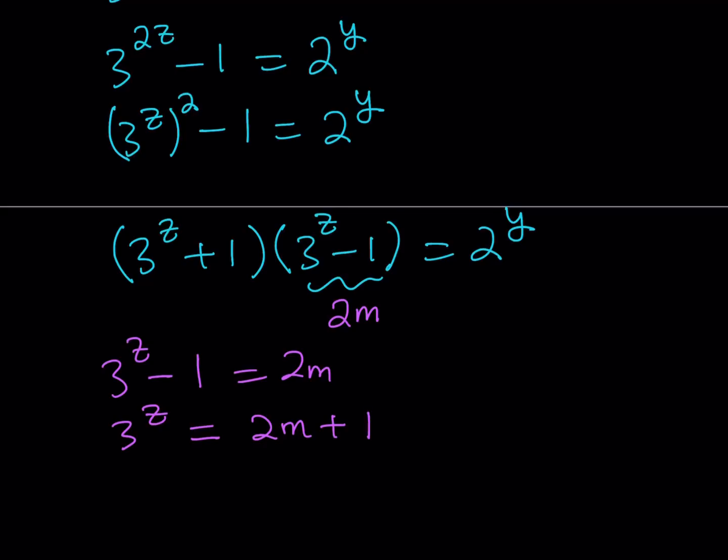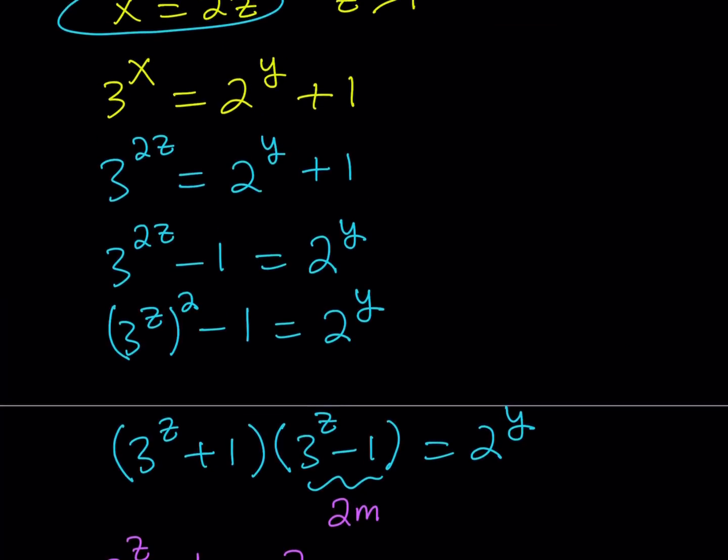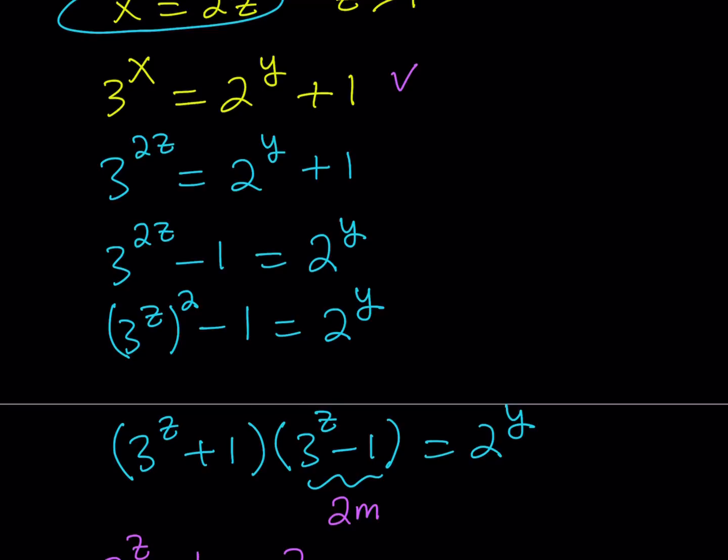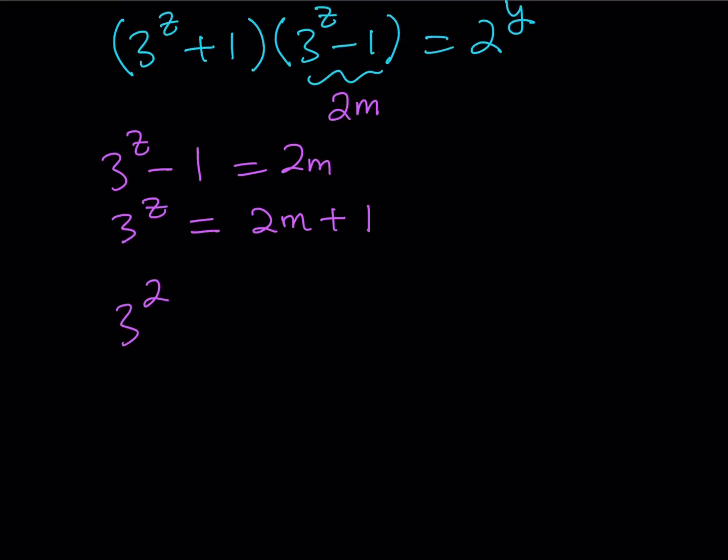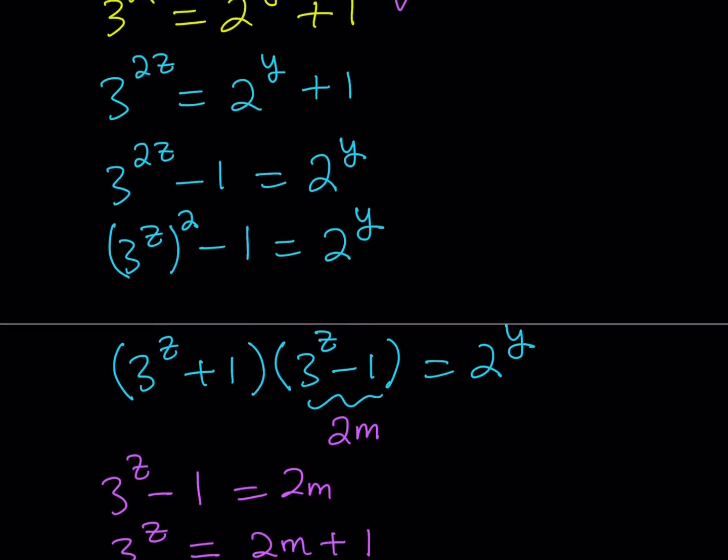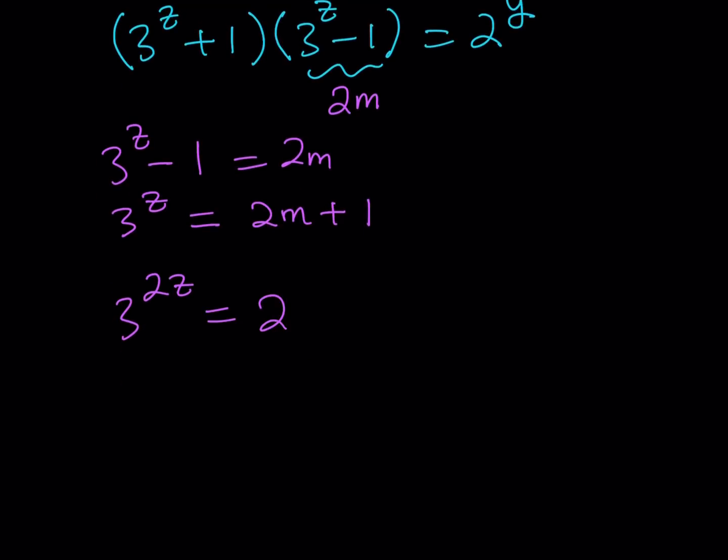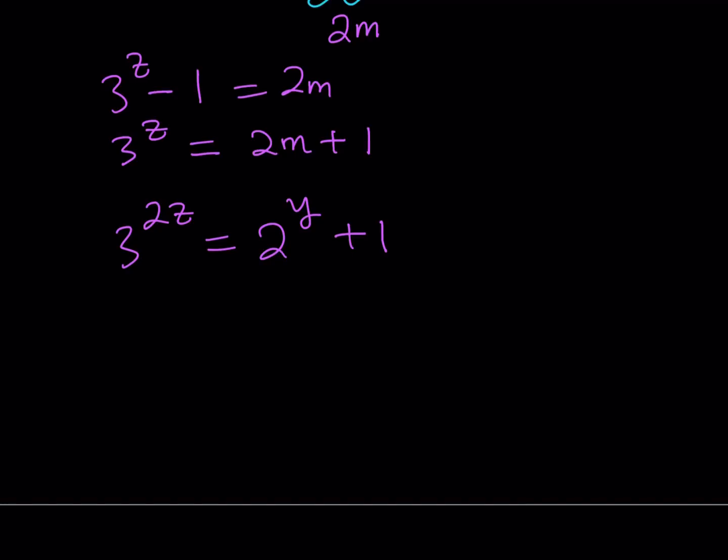Now what is so significant about it is our original equation. If you remember, we had this equation, and then we replaced x with 2z. So we have 3 to the power 2z equals 2 to the power y plus 1. I'm going to replace 3 to the power z with 2m plus 1. So this can be written as 3 to the power z squared. I'm going to replace 3 to the power z with 2m plus 1. This is 2m plus 1 squared, and that equals 2 to the power y plus 1.